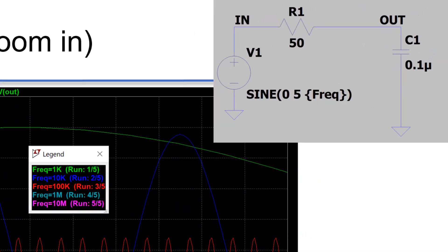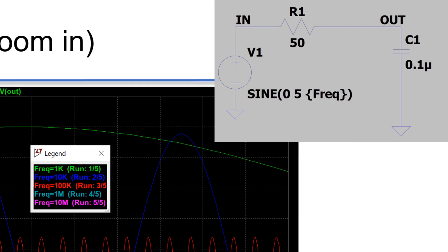The reason is RC works as a voltage divider. Capacitor impedance is greatly reduced at higher frequency. That means less and less voltage drop over C1, and most of the voltage drop is across R1 instead of C1.